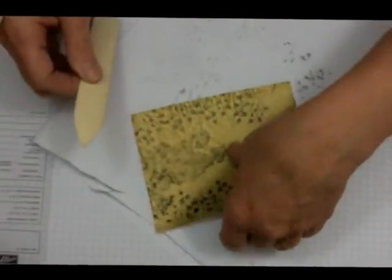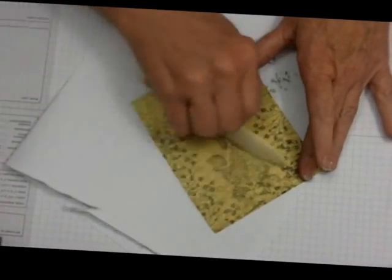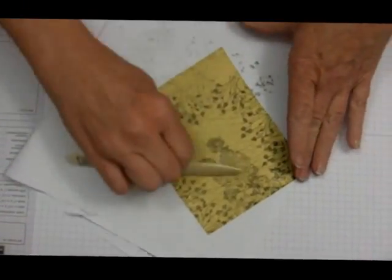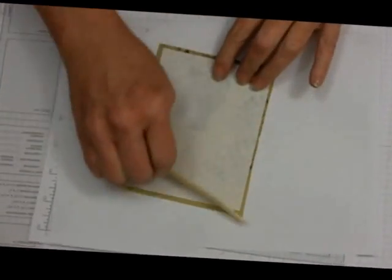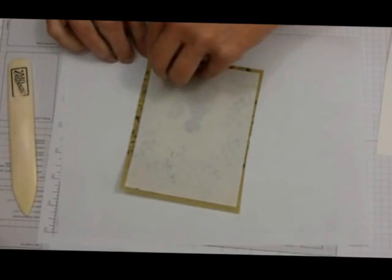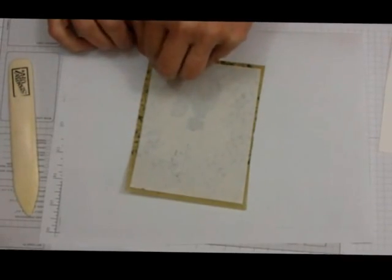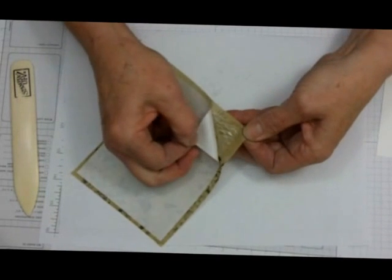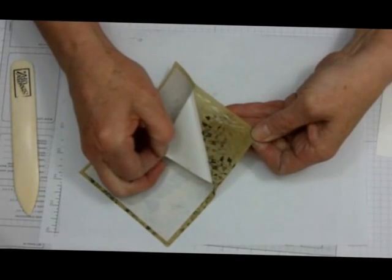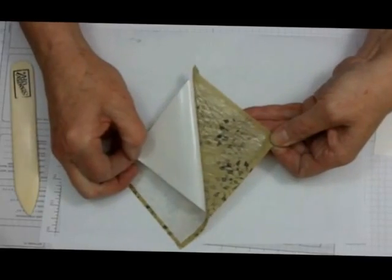Turn it over to the other side, and bone fold again. That'll give you nice little creases. When you try to peel it back, if it doesn't release, then you just bone fold it again. You'll see the glue pulling up, and then you can pull it back. And the glue will stay in place.